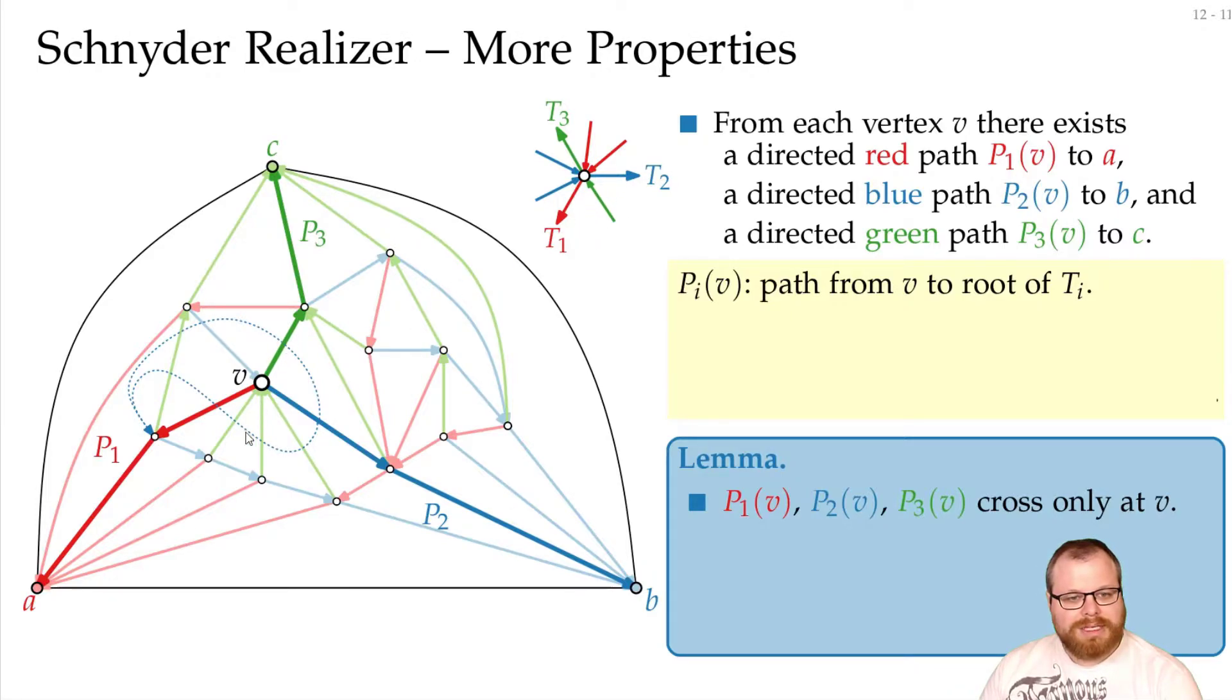So we cannot have this crossing, and we cannot have this crossing. And that means we cannot get to this area, so we also cannot have a crossing like this. So they only cross at v. And with the same argument, we also cannot have a crossing with the green path.